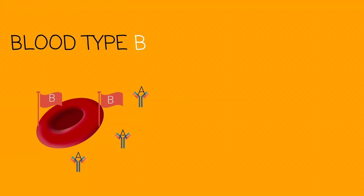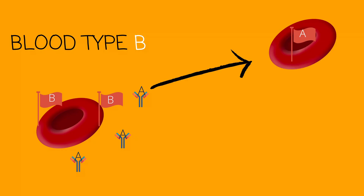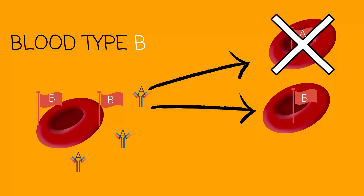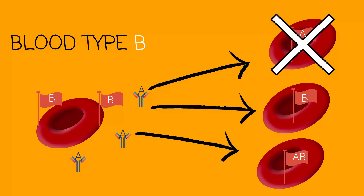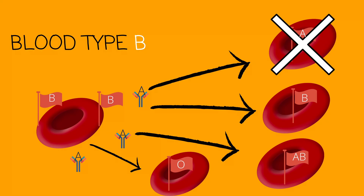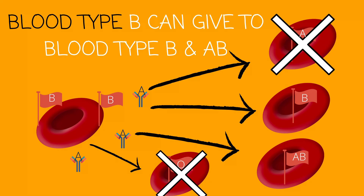Now working with blood type B. Blood type B will only be able to give blood to others with the B antigen — the B flag. Can it give to A? No. Can it give to B? Yes. Can it give to AB? Yes. Can it give to O? No. Blood type B can only give to B and AB.